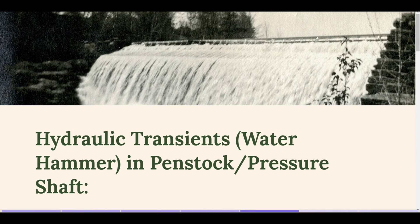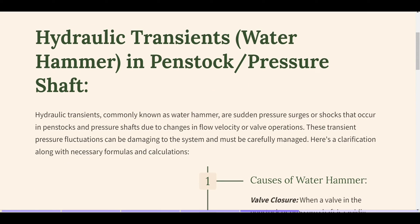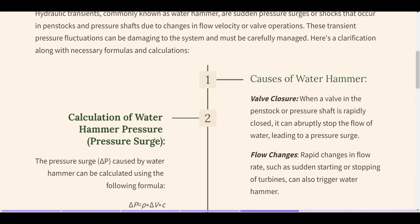Hydraulic transients, commonly known as water hammer, are sudden pressure surges or shocks that occur in penstocks and pressure shafts due to changes in flow velocity or valve operations. These pressure fluctuations can be damaging to the system and must be carefully managed. Causes of water hammer: valve closure — when a valve is rapidly closed, it can abruptly stop the flow of water, leading to a pressure surge. Flow changes — rapid changes in flow rate, such as sudden starting or stopping of turbines, can also trigger water hammer.